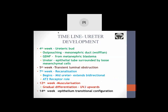In a timeline, from the fourth week the ureteric bud develops as an outpouching. GDNF released from the metanephric blastema initiates ureteric development. At this stage, the ureter is just an epithelial tube surrounded by loose mesenchymal cells. In the fifth week, there is transient luminal obstruction which in the sixth and seventh week undergoes recanalization. Recanalization begins in the mid-ureter and extends bidirectionally, influenced by angiotensin II receptor. In the twelfth week, there is muscularization with gradual differentiation from the ureterovesical junction upwards. By the fourteenth week, the epithelium gets a transitional configuration.